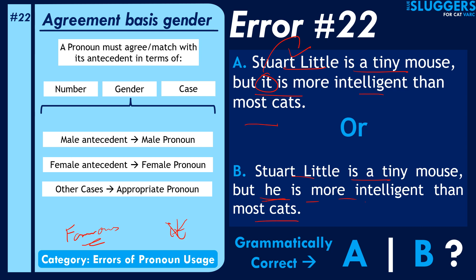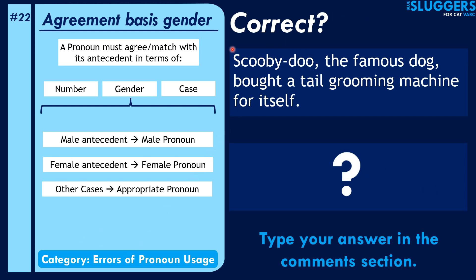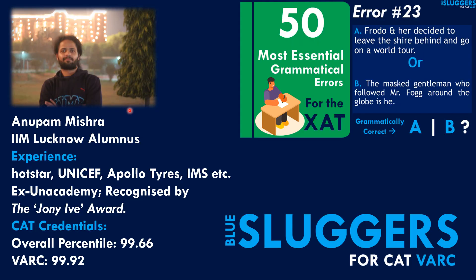So the correct version is: 'Stuart Little is a tiny mouse but he is more intelligent than most cats.' Because of this exception, 'it' would be wrong and 'he' would be correct. Now you can try the next sentence: 'Could we do — the famous dog — bought a tail grooming machine for itself?' Let me know if you think the sentence is correct, or what the correct version should be.